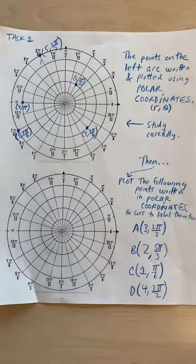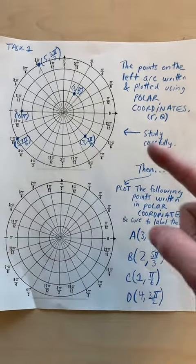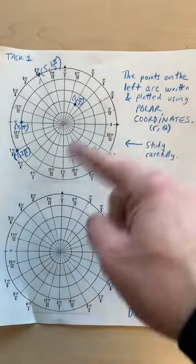So here's how I plan to thin slice polar coordinate introduction right here. Check this out. Here we have points R theta plotted here. We have five of them.